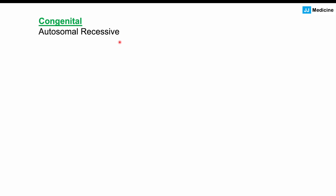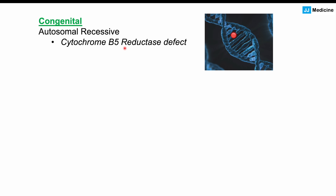In congenital cases, there are autosomal recessive conditions that can cause methemoglobinemia. One of them involves an important enzyme called cytochrome B5 reductase. In the autosomal recessive form, there is a defect in this particular enzyme. We'll discuss the importance of this enzyme when we talk about the pathophysiology.